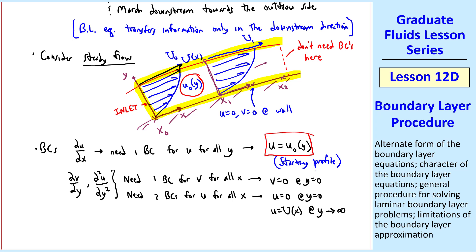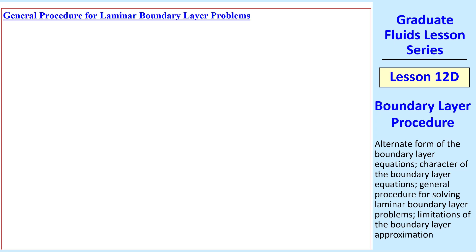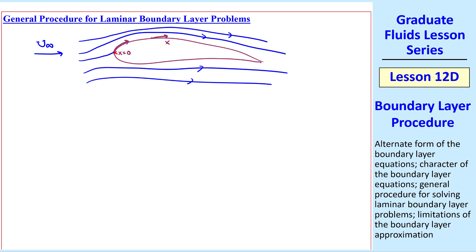Now we have all boundary conditions, two equations, and two unknowns u and v. We're ready to discuss the general procedure for boundary layer problems. Consider flow over some body, like a wing, with some free stream flow and streamlines. As discussed previously, we start our x-coordinate at the stagnation point, and we'll examine some arbitrary location along the wall where we want to solve for the boundary layer.